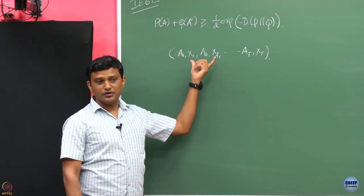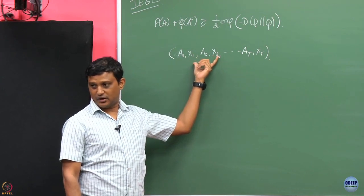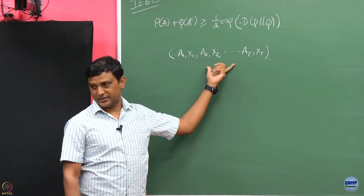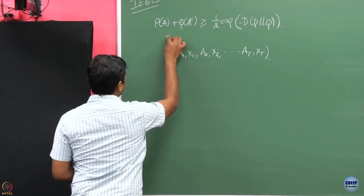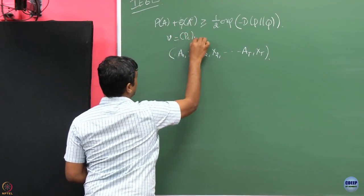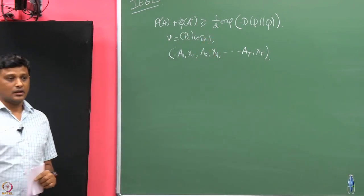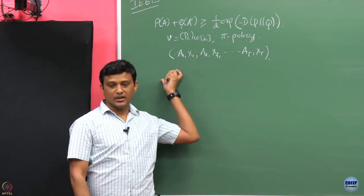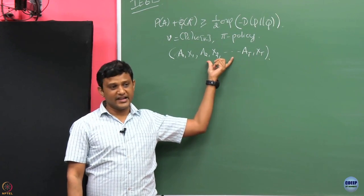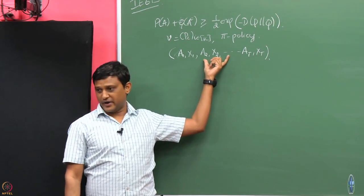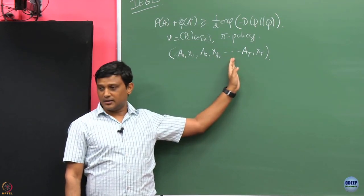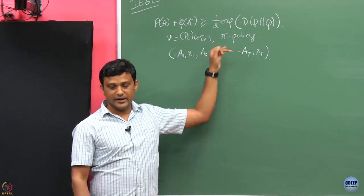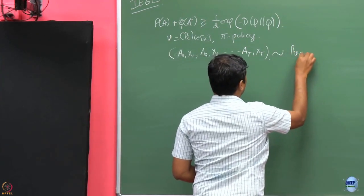If you look at the distribution of the sequence of actions and rewards, this distribution is induced by the environment ν and your policy π. Let me call that induced distribution ν^π.